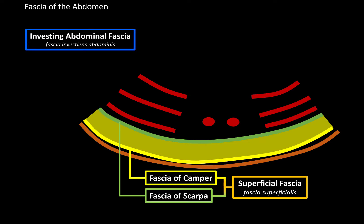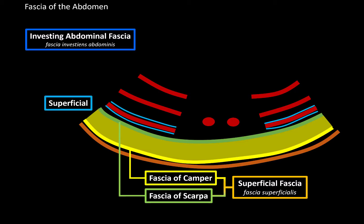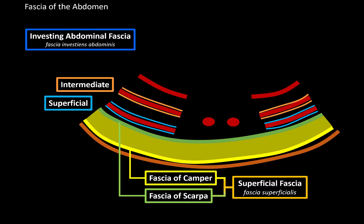Next, we have a fascia called the investing abdominal fascia. As the name implies, this fascia is going to surround the abdominal muscles. The investing abdominal fascia is divided into three layers. First is the superficial investing abdominal fascia surrounding the external oblique. Then there's the intermediate investing abdominal fascia surrounding the internal oblique. Then there's the deep investing abdominal fascia surrounding the transverse abdominal muscle.